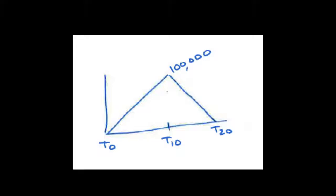When we get to time 20, the tax base has stayed at zero the whole time, but the carrying value is back down at zero, and we end up with a temporary difference of zero. So what we started with was $200,000 and $200,000, a temporary difference of zero. We got to a peak at time 10 of $100,000 temporary difference, and ended up back down at zero. So most assets exhibit that sort of function in relation to their deferred tax liability. The temporary differences increase to $100,000 and drop away.